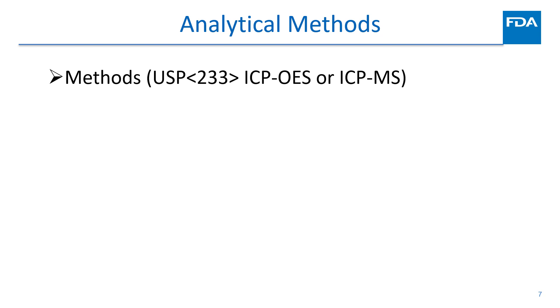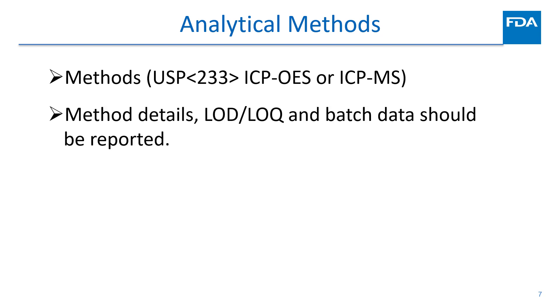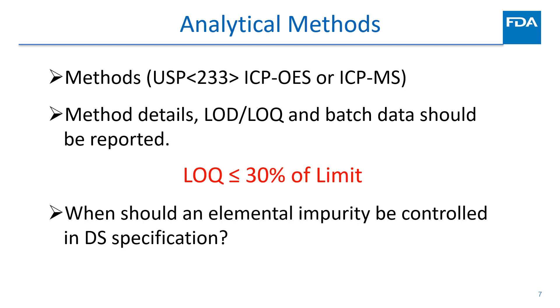Elemental impurities are detectable by inductively coupled plasma, or ICP. The procedures are given in USP General Chapter 233. The recommended analytical procedures are ICP-OES or ICP-MS. The method details, method LOD, LOQ, and batch data should be reported. ICH Q3D suggests a control threshold at a limit of 30% of the established PDE of the elemental impurity. Therefore, the method LOQ should be no more than 30% of the limit. When should an element be controlled in a drug substance specification? If the level of an element is higher than 30% of the limit in batch data, this element should be controlled.